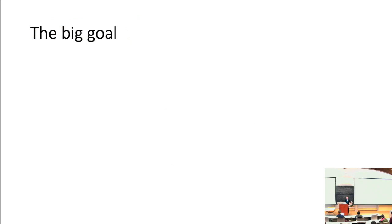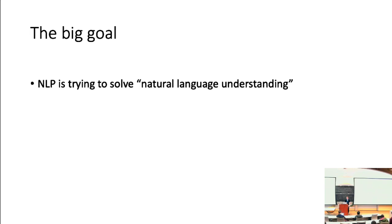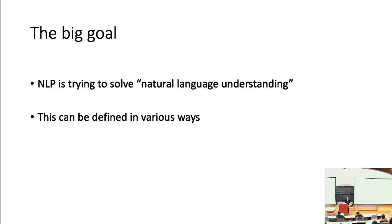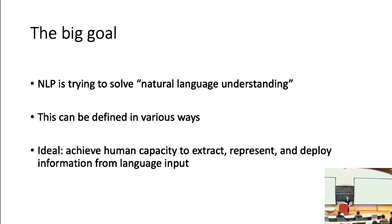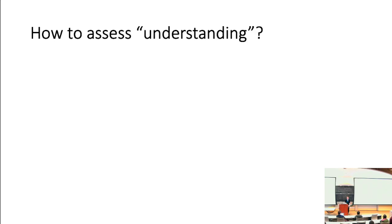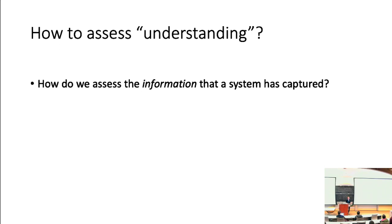The big goal of natural language processing, at least from the perspective of many, is to achieve so-called natural language understanding. We can define understanding in a variety of ways — it's really quite a difficult notion to pin down. But I think we can safely say that the ideal would be to achieve a human-level capacity to extract, represent, and deploy information from language input. When we define understanding in this way, the immediate question that arises is how do we evaluate understanding defined in this way?